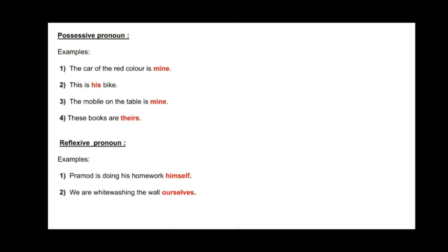Possessive pronoun. Possessive pronouns indicate possession, ownership, or belonging. For example: The car of the red color is mine — here the word 'mine' is a possessive pronoun. This is his bike — here the word 'his' is a possessive pronoun. The mobile on the table is mine — here the word 'mine' is a possessive pronoun. These books are theirs — here the word 'theirs' is a possessive pronoun.